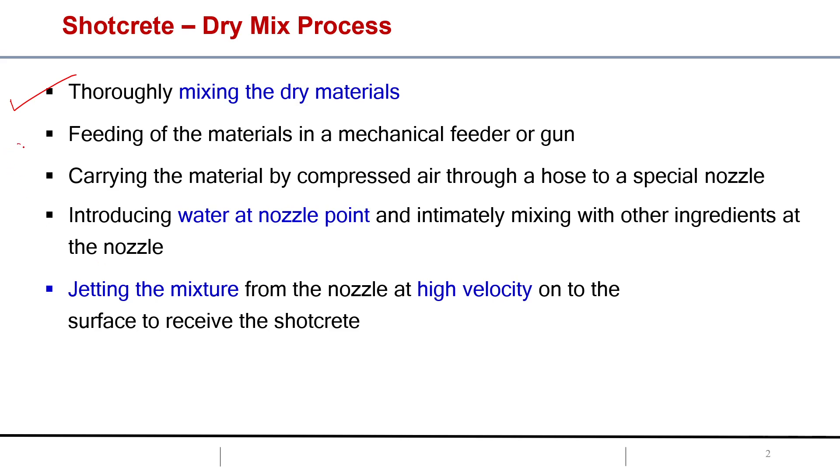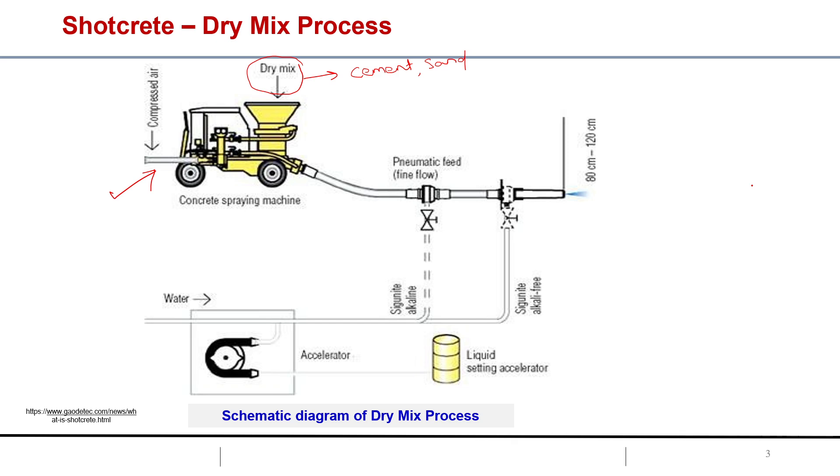Feeding of the materials in the mechanical feeder or the gun, then carrying the material by compressed air through a hose to a special nozzle. Whatever dry material is there, with the help of compressed air through a hose, or in simple word it is nothing but a pipe, will be carried to a special nozzle. Here you can see we put the dry mix and using the compressed air we will carry this material through this hose or pipe.